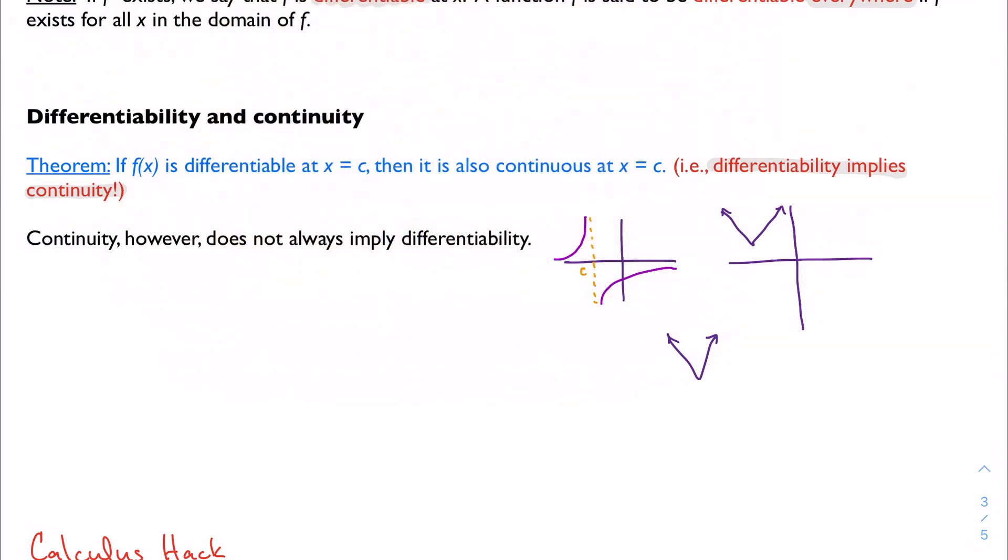It is continuous at that point c. It is not differentiable at that point c. And we'll explain why in class because I don't want to take up too much time in the video. But any of these sharp points are not differentiable. So it's just a quick example of why the statement doesn't work the other way around. But the key is that if it's differentiable, it is continuous. So differentiability implies continuity.